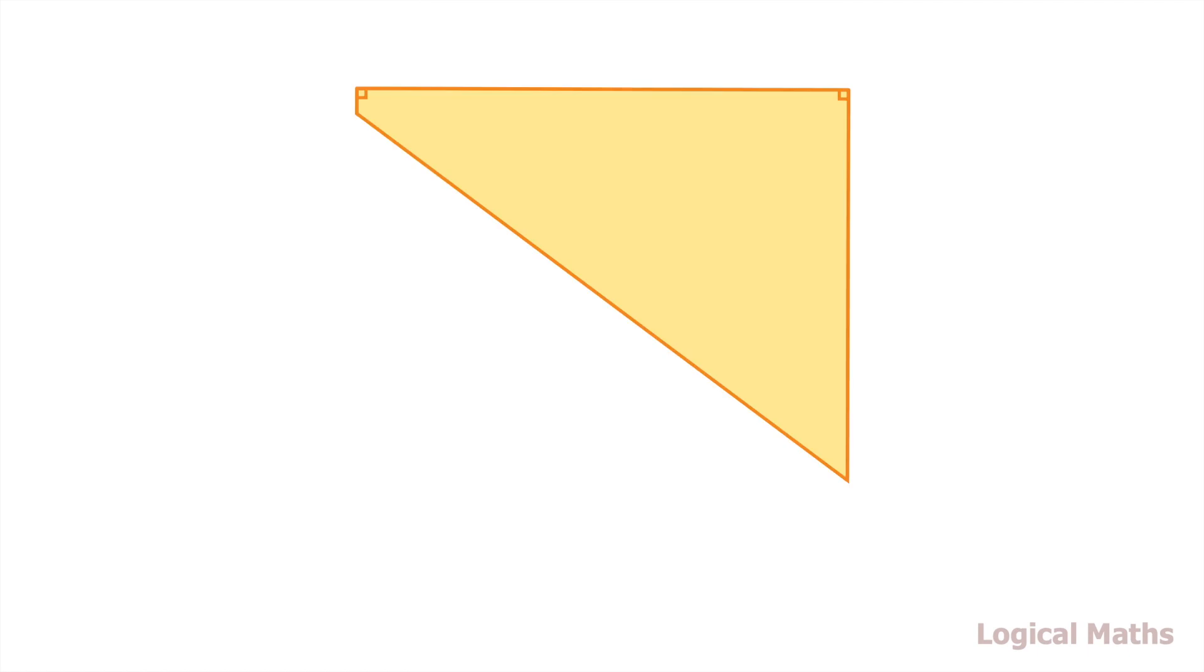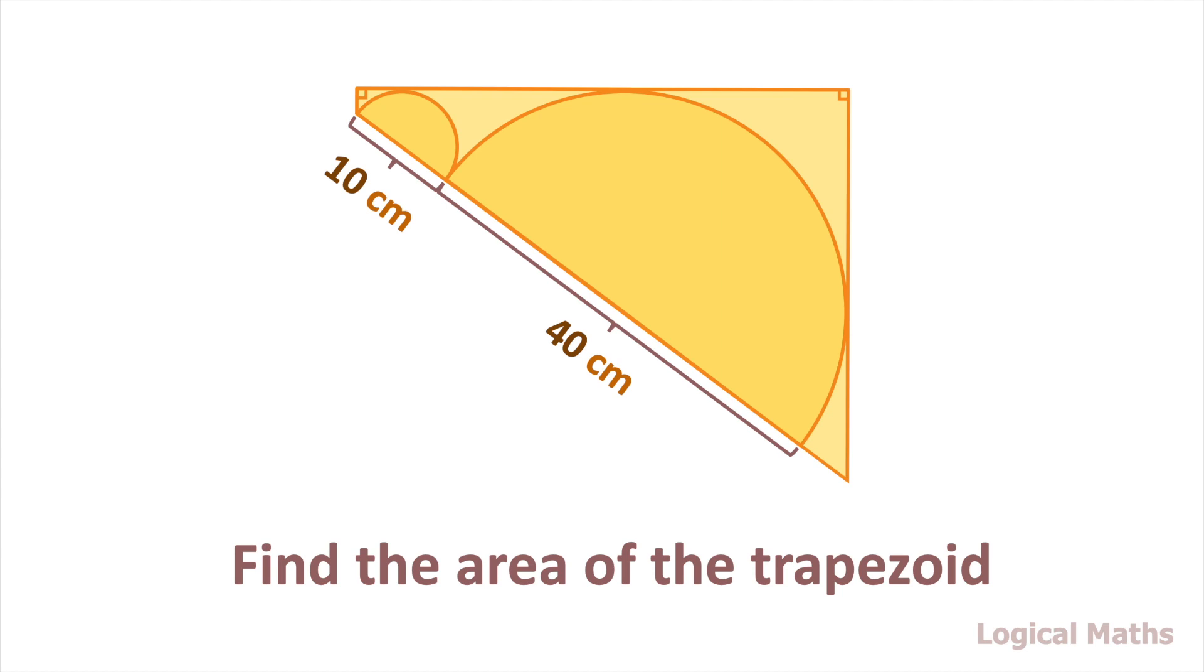We have a bright trapezoid. Two semicircles are inscribed inside. Diameter of the small semicircle is 10 cm and diameter of the large one is 40 cm. What is the area of the trapezoid?